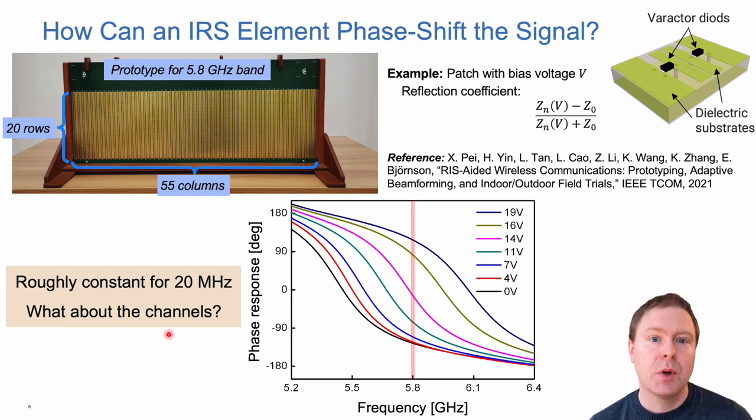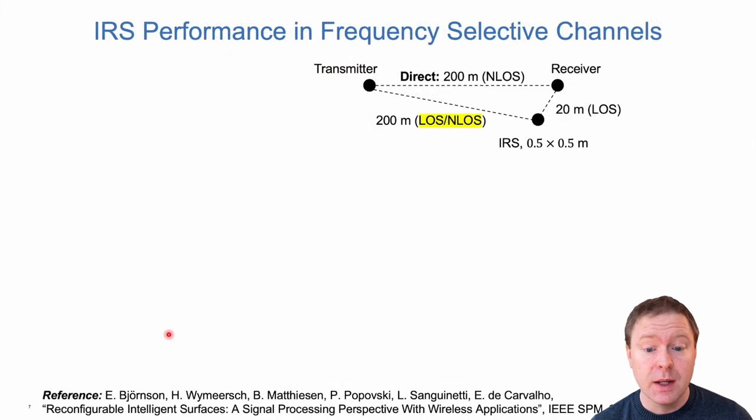But channels, propagation channels, can vary much more rapidly than that. And that is exposing one of the limitations of this technology. So let's look at that with a simulation example. We have an IRS operating in a potentially frequency selective channel.